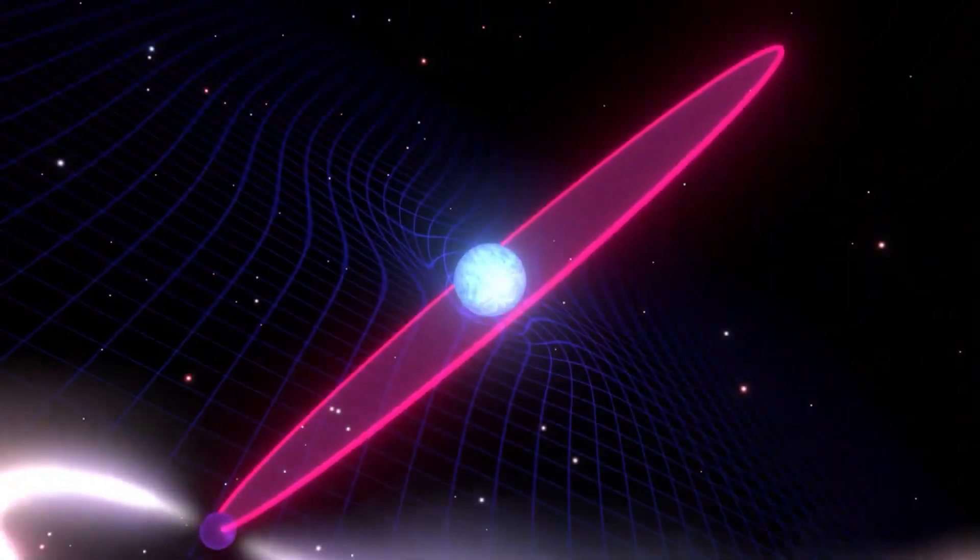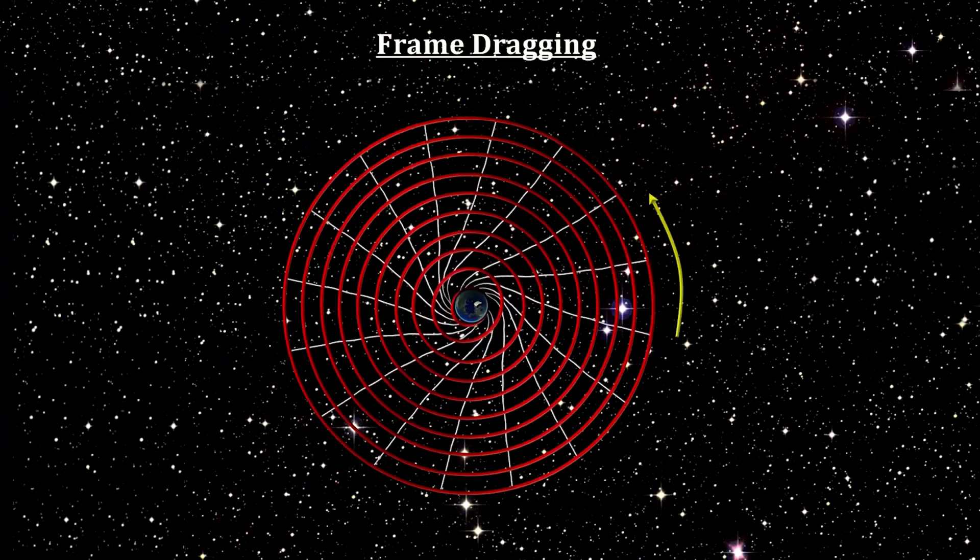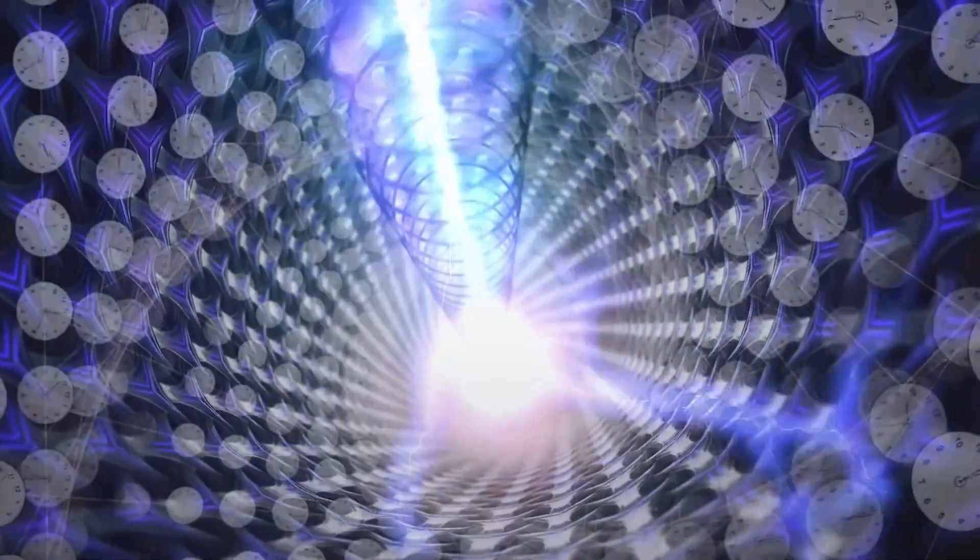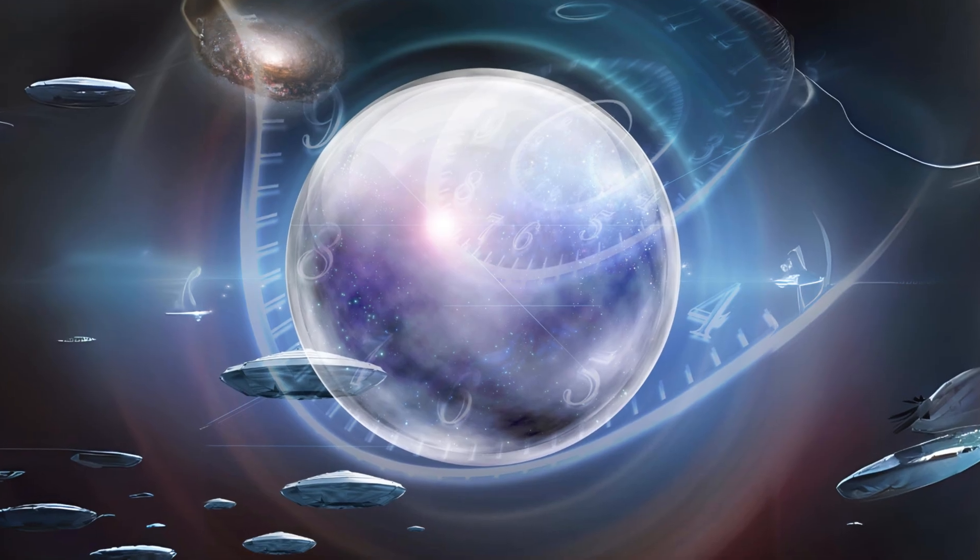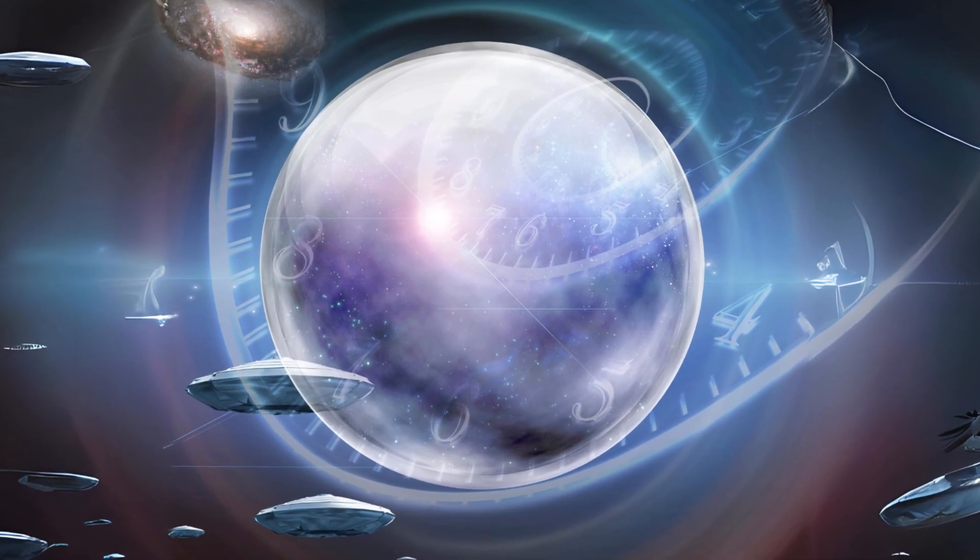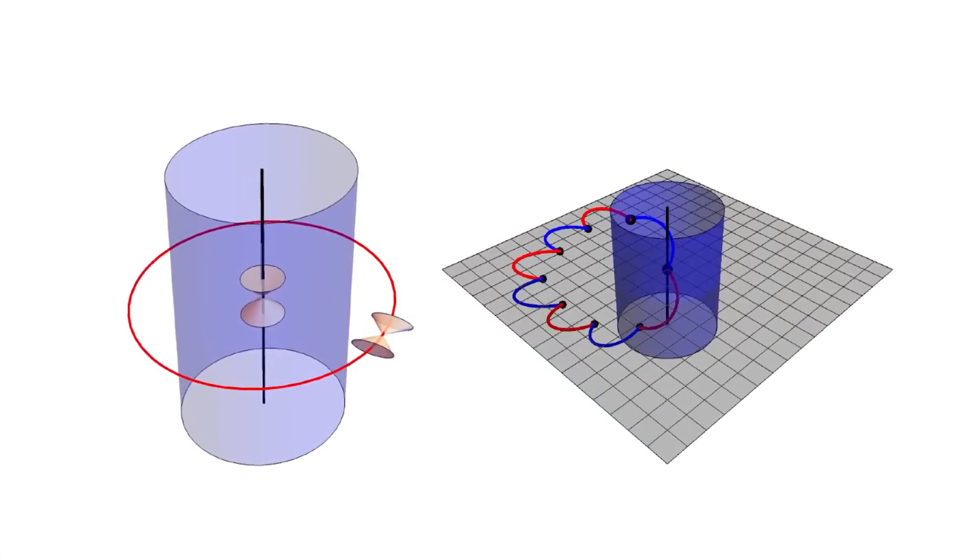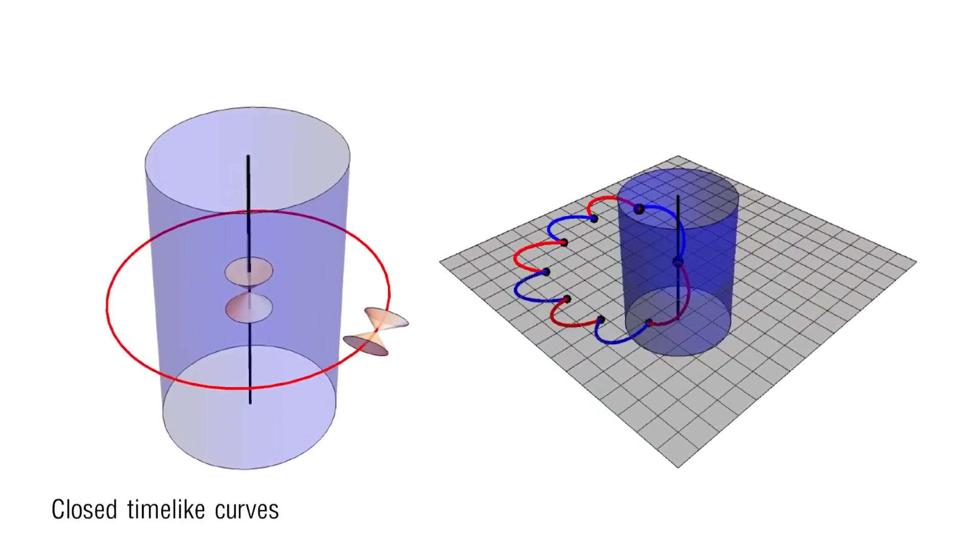This effect is called frame dragging. In the case of the Tipler Cylinder, its intense rotational motion will create the frame dragging effect. Tipler proposes that the combination of the cylinder's rotational motion and the frame dragging effect can create a region of twisted space-time, forming curves similar to closed time-like curves. These are paths through space-time, essentially forming a time loop, allowing time travel within it.